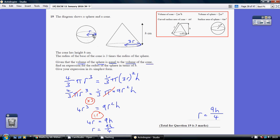So let's call the radius of the sphere R and the radius of the base of the cone 3R. So using the given formula, we know the volume of a sphere is four-thirds pi R cubed.